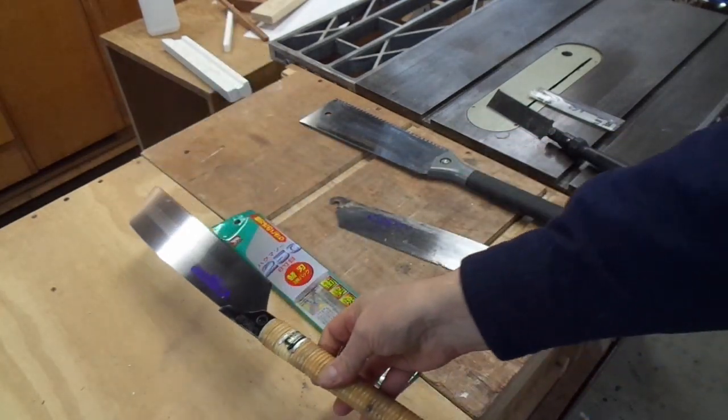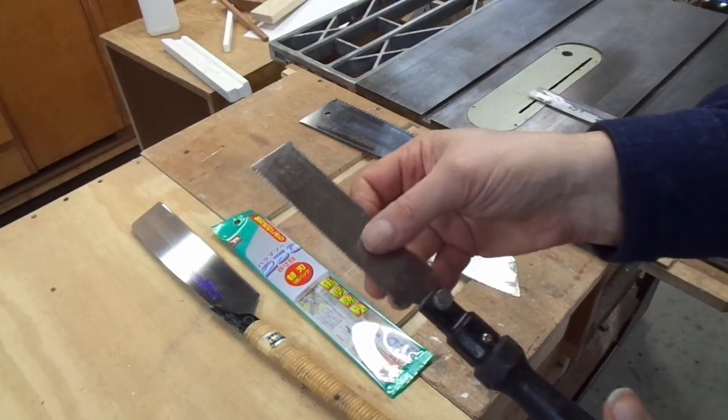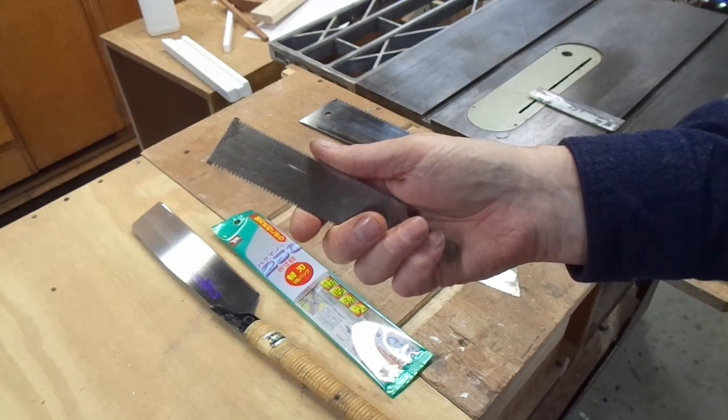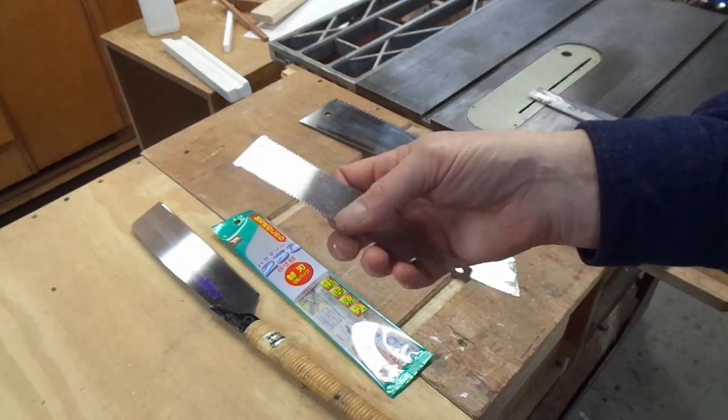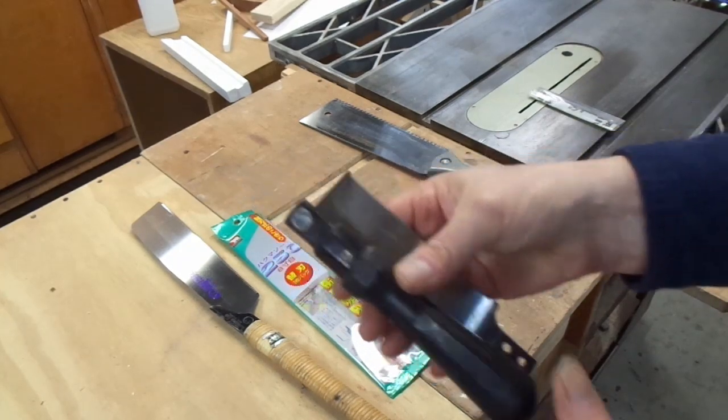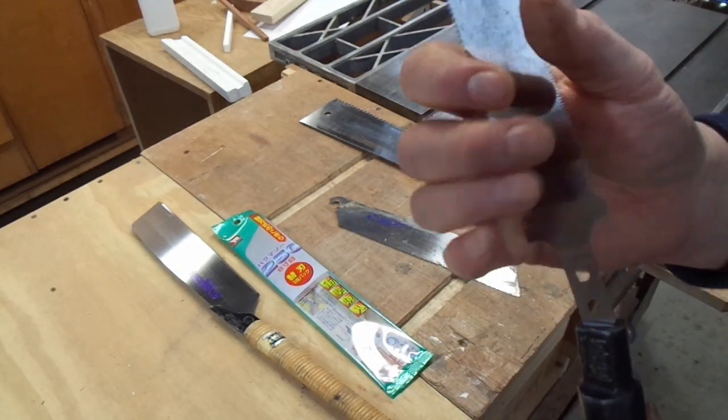I enjoy these pull saws so much that I carry this ryoba. It has two sets of teeth: fine on one side for crosscut, coarse on the other for ripping. This comes apart so I can carry the two pieces in my tool bag.